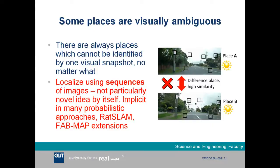The next observation motivating this work is that some places are visually ambiguous no matter what processing methodology you're using — there are always places in the environment which you can't uniquely identify based off just one visual snapshot, whether you're using features or not. So the approach in this work, and indeed in many existing approaches to navigation and map making, is to localize using sequences of images. This is implicit in many probabilistic approaches, such as RATSLAM and some extensions to the FABMAP system.